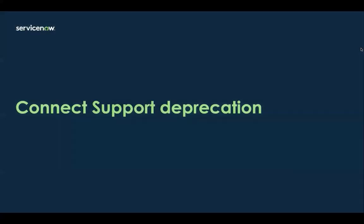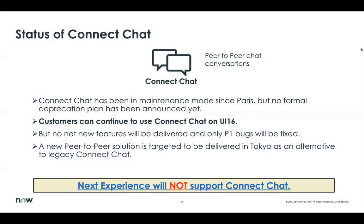Connect support deprecation. Especially in San Diego, we are formally announcing the Connect support deprecation plan. Before going to the plan, Connect Chat is our legacy peer-to-peer chat conversations product. Customers can continue to use Connect Chat on the older UI 16, but no new features will be added and we only fix P1 bugs.